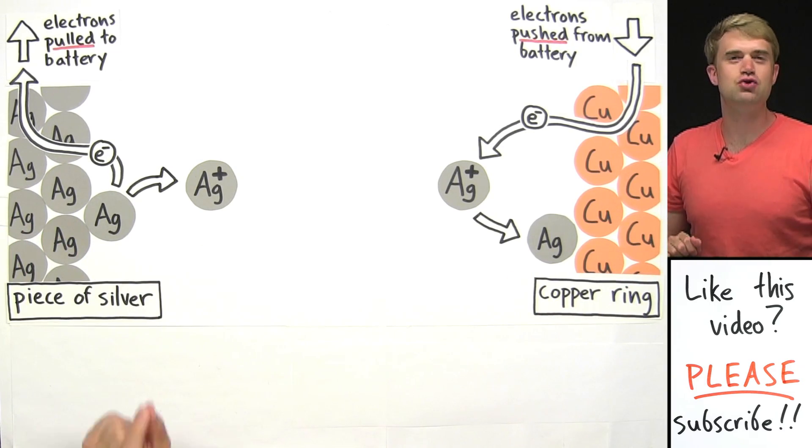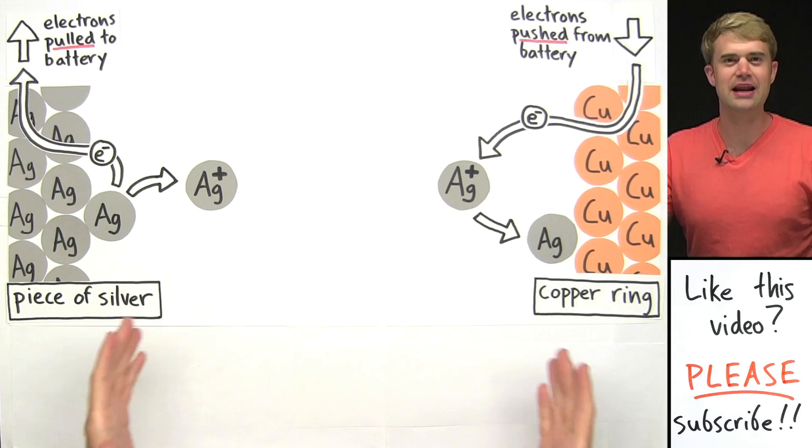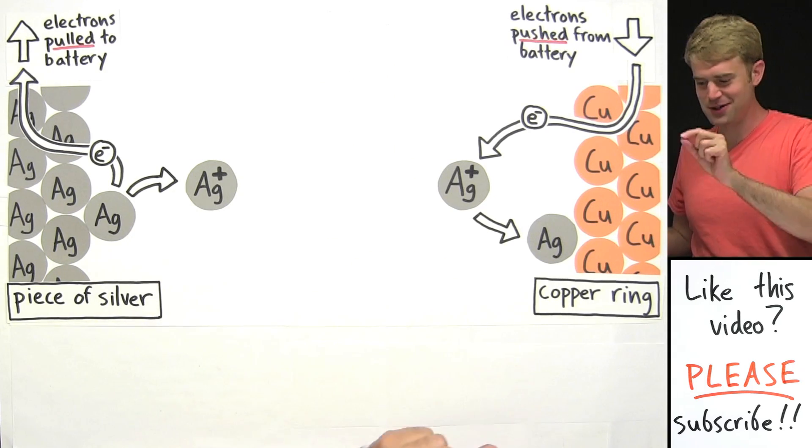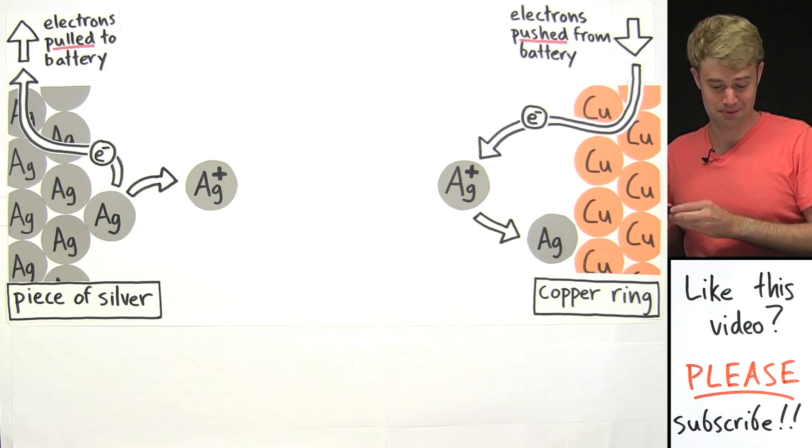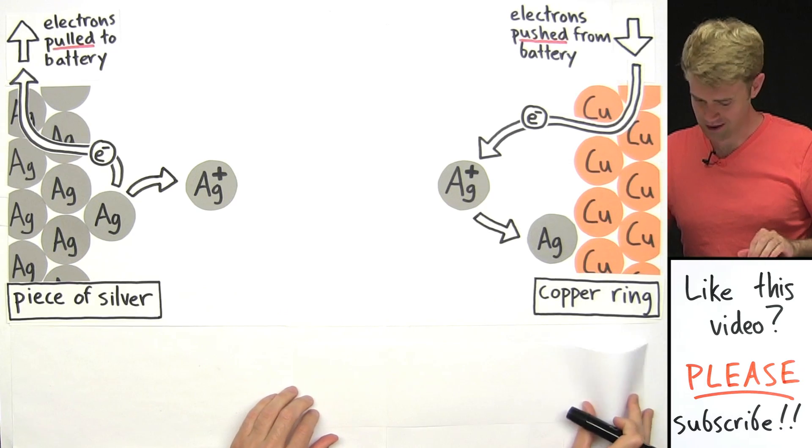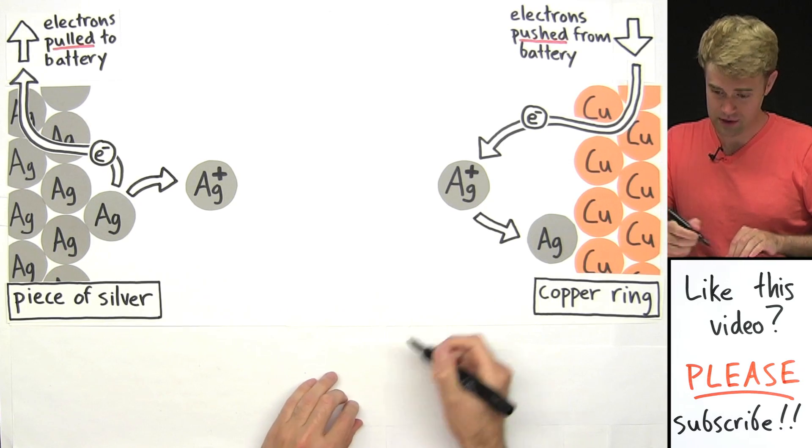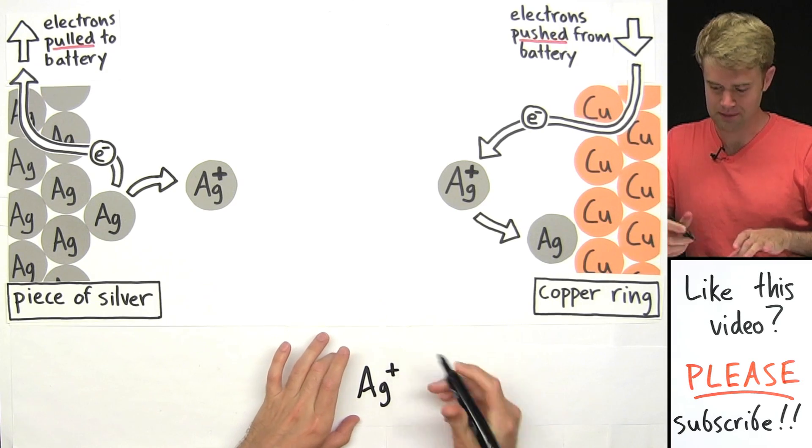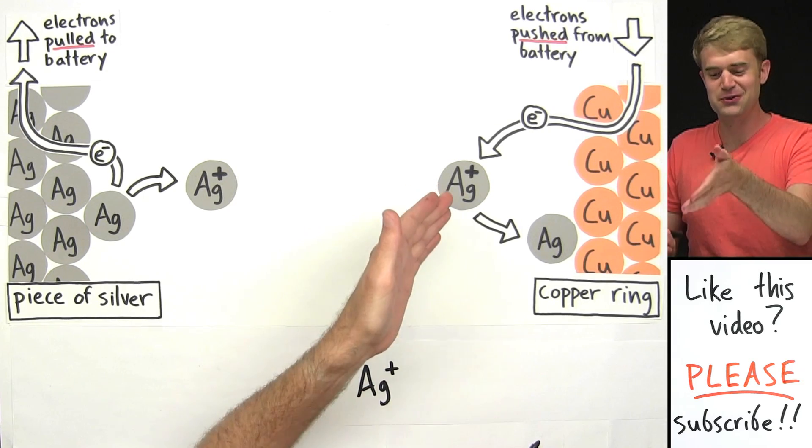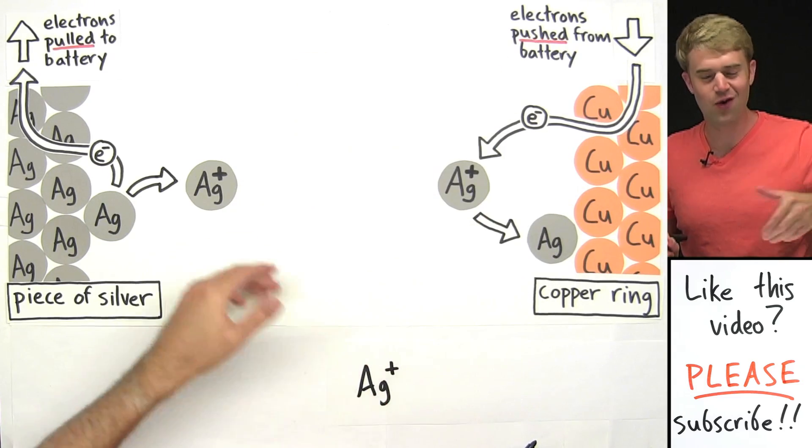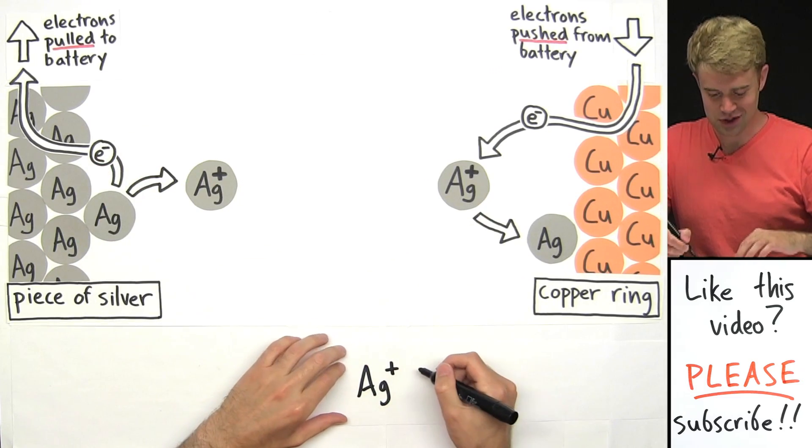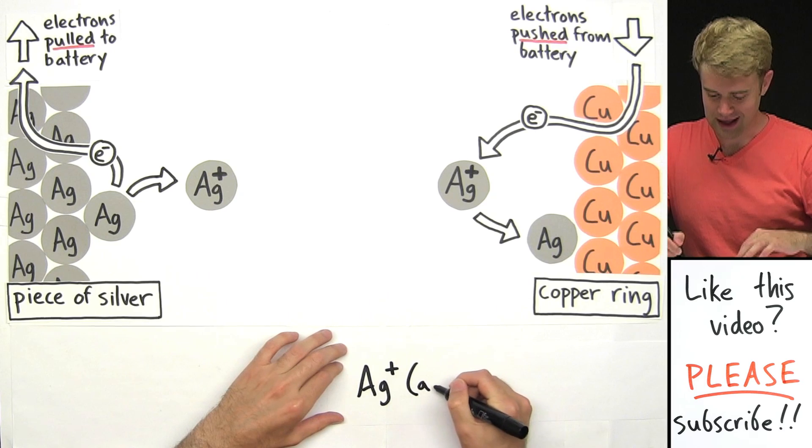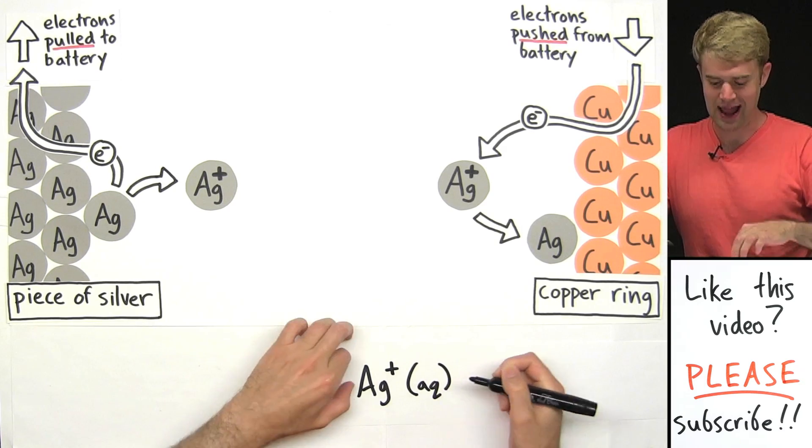Now let's see how we could describe the same process by writing chemical equations. We'll start with what's happening over here on the copper ring. So here, we start with the Ag one-plus ion.